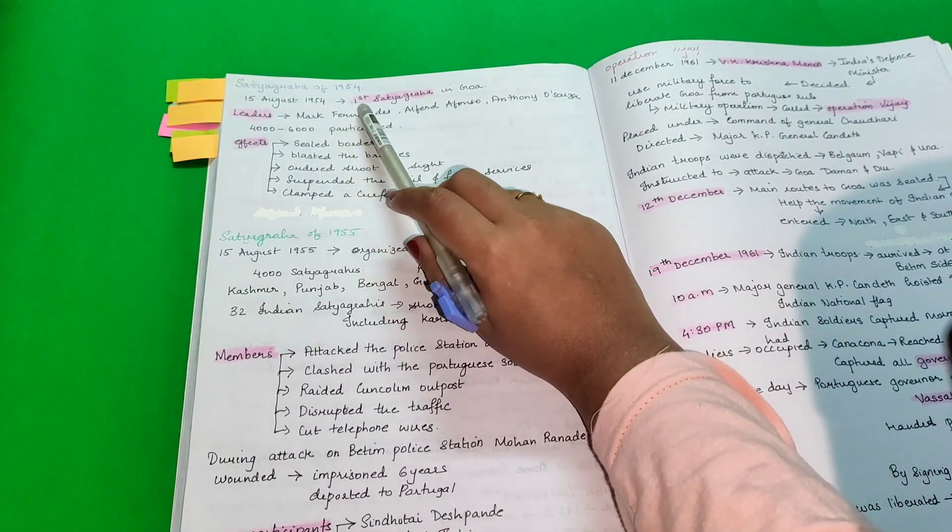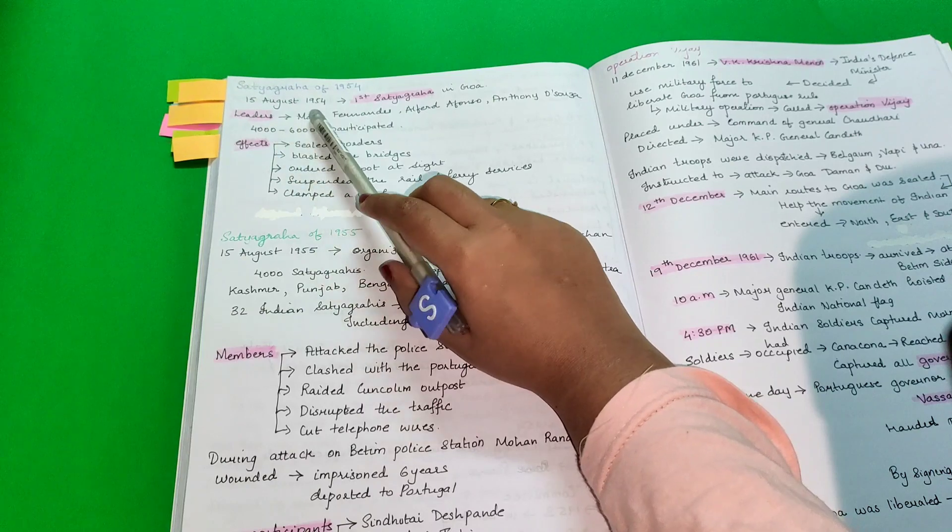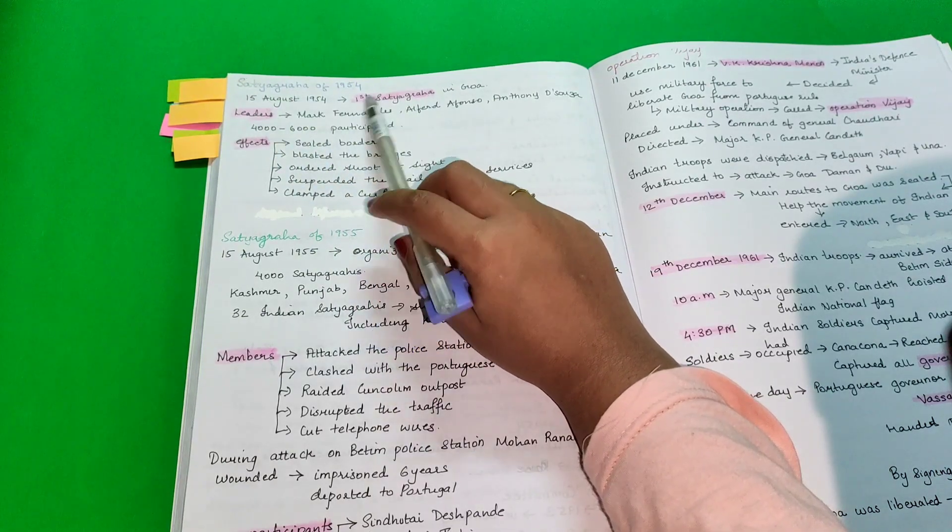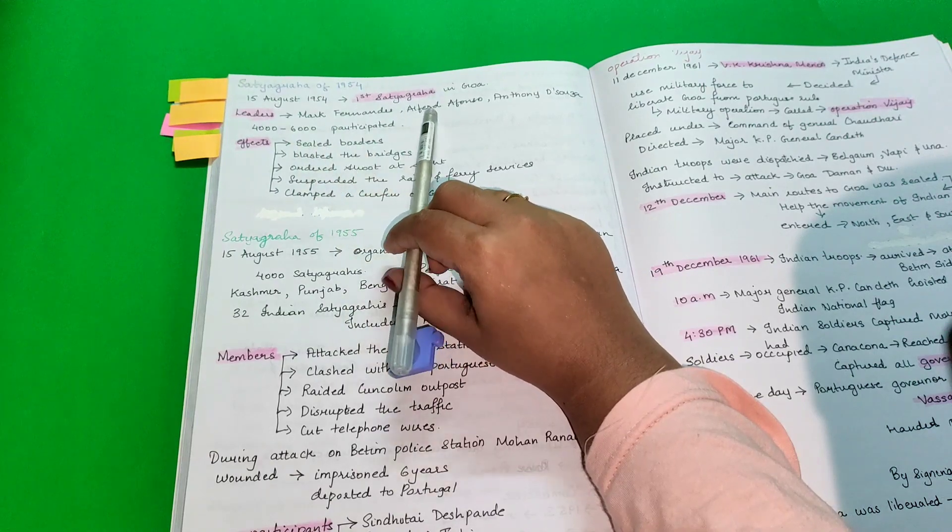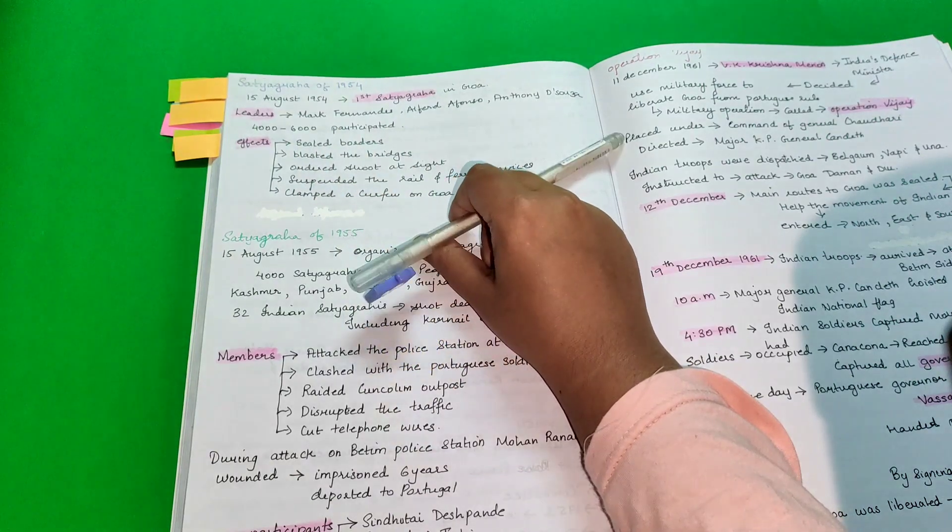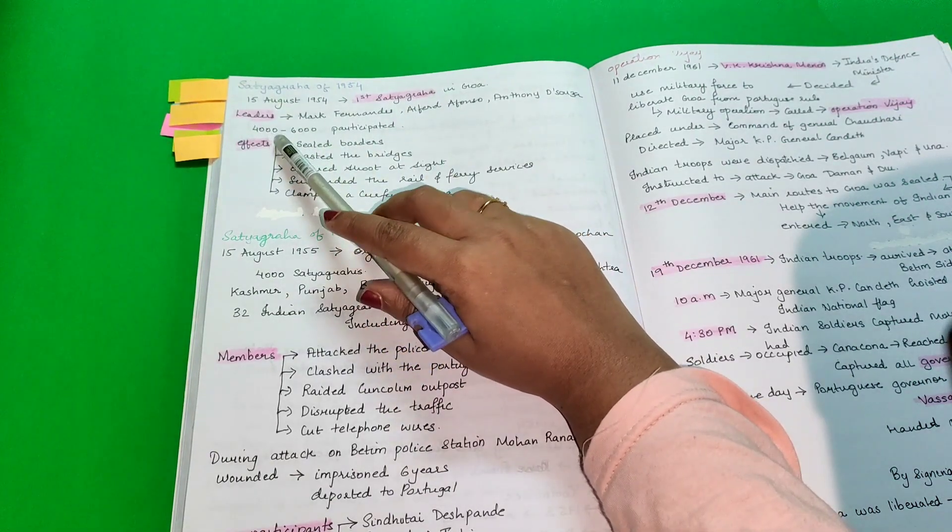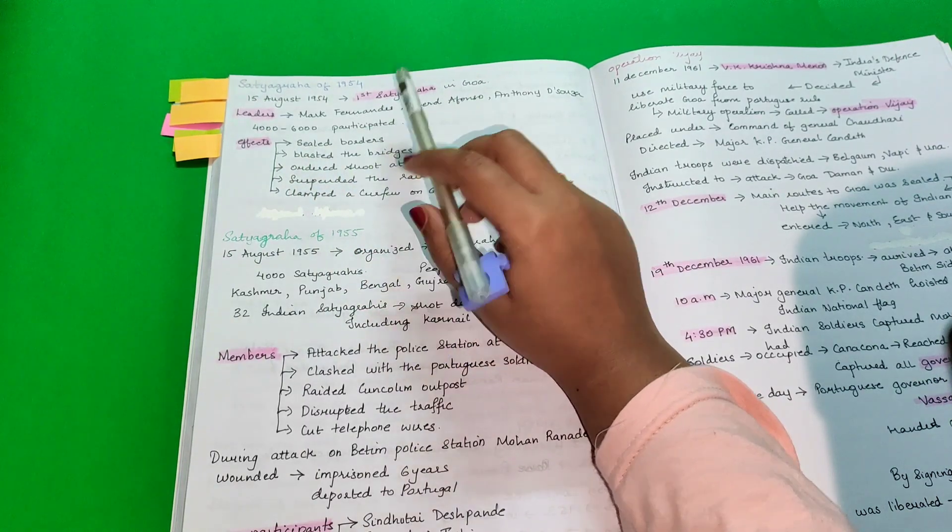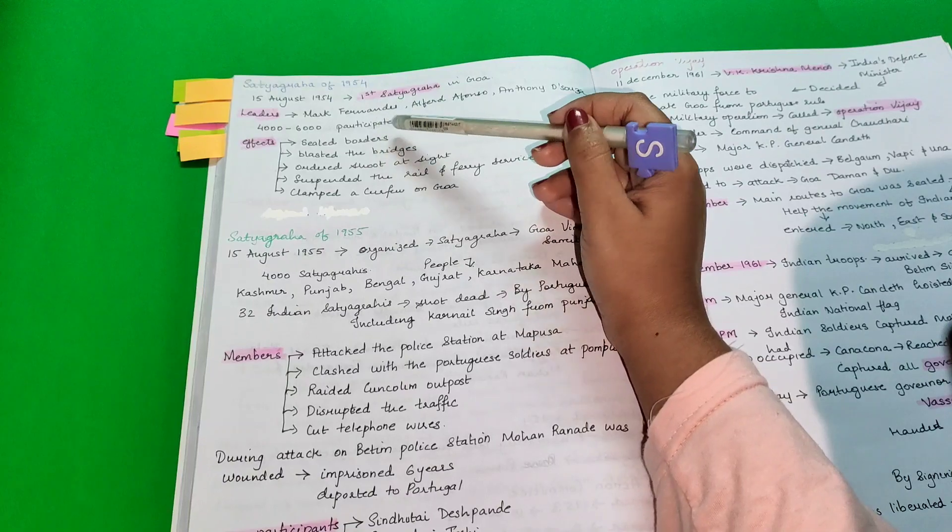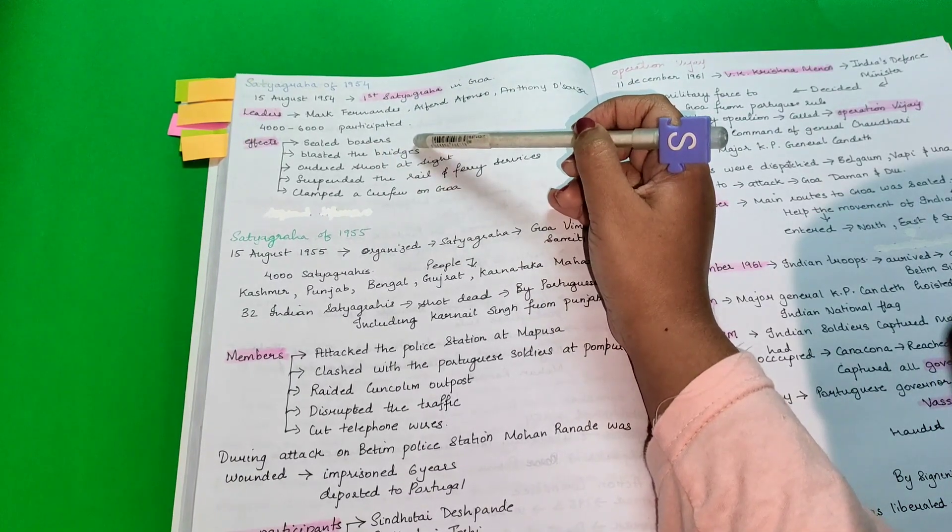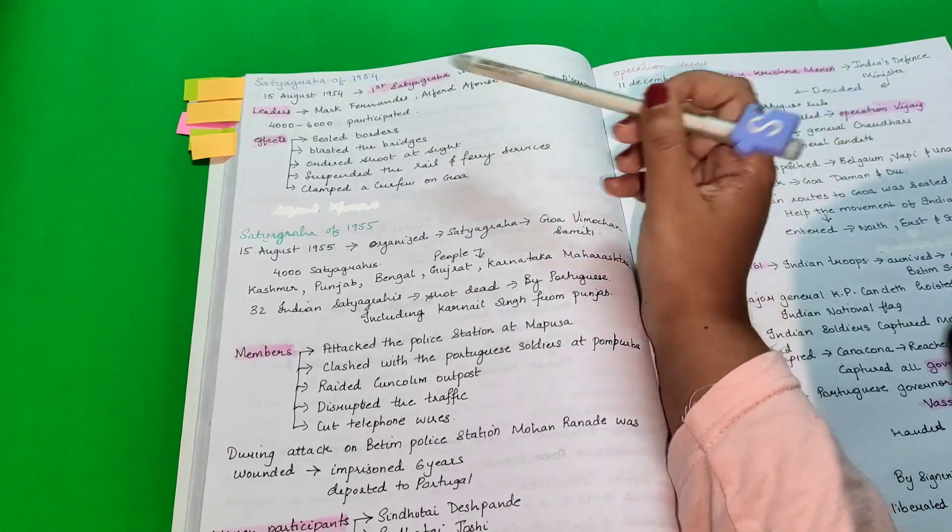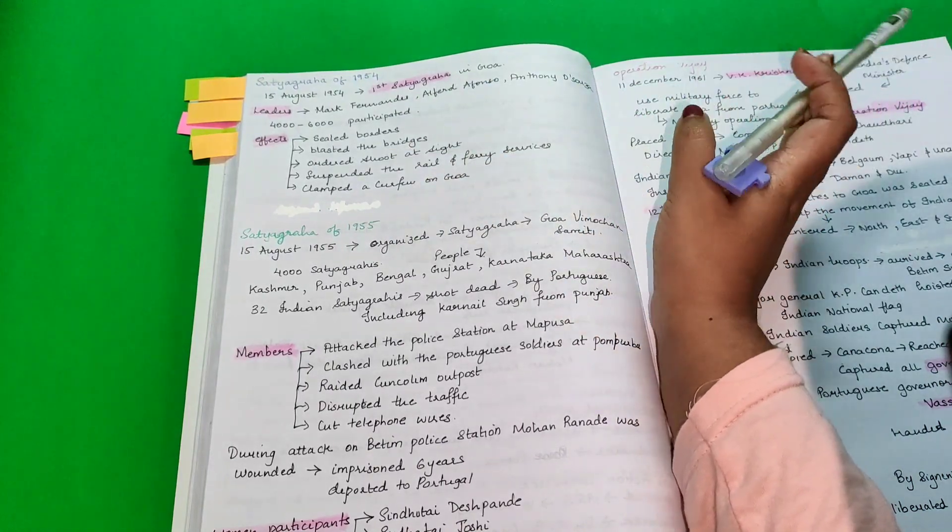Satyagraha of 1954. On 15th August 1954, first Satyagraha in Goa took place. Leaders were Mark Fernandes, Alfred Afonso and Tony de Souza. There were almost 4,000 to 6,000 participants in this. The effects of this was the Portuguese sealed the borders, blasted the bridges, ordered shoot at sight, suspended rail and ferry services and claimed a curfew on Goa.